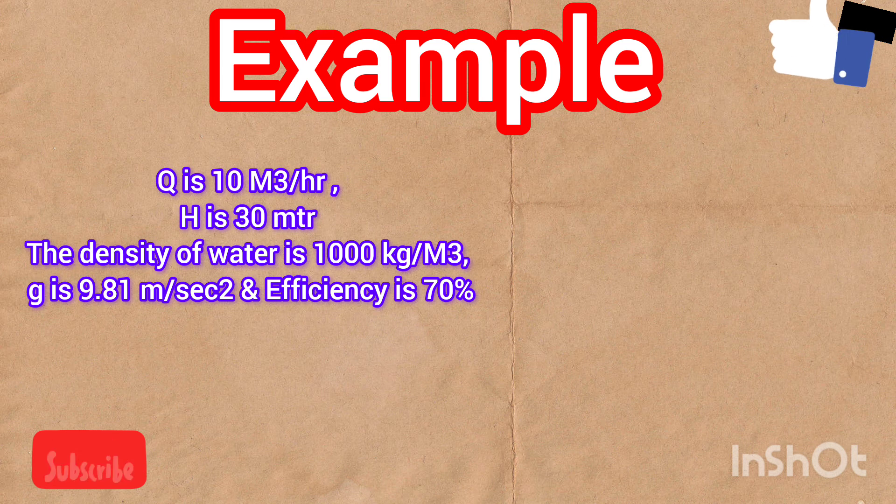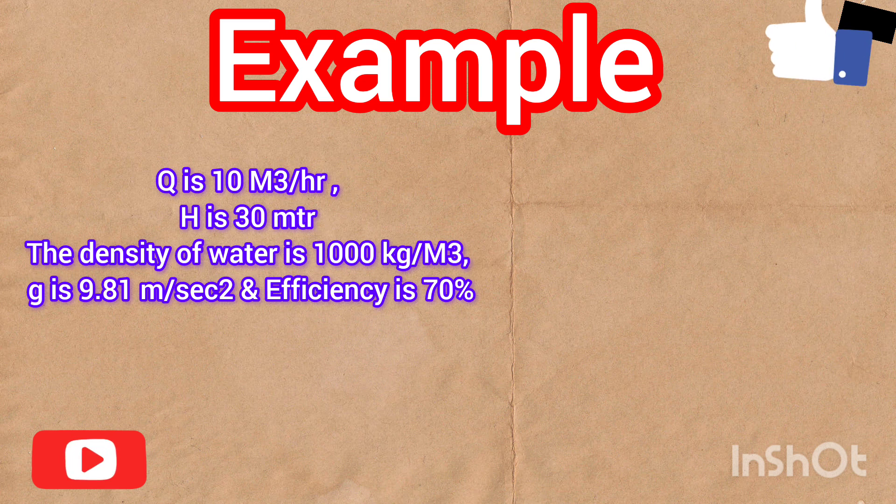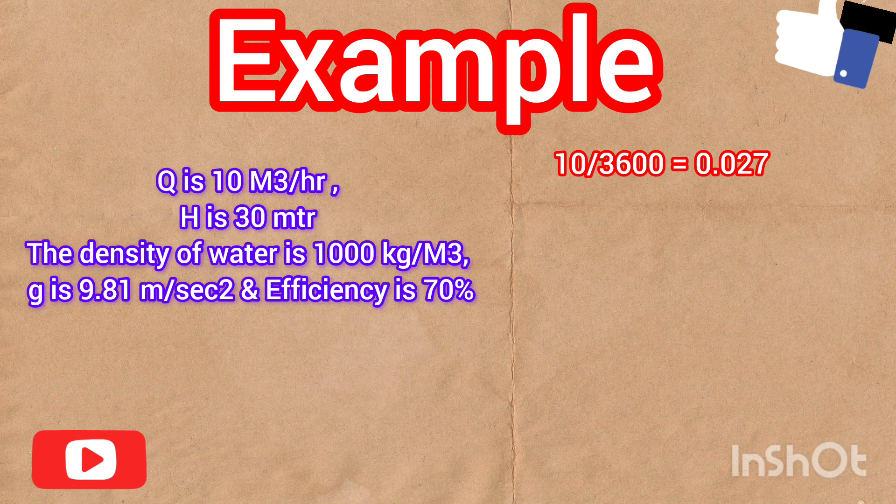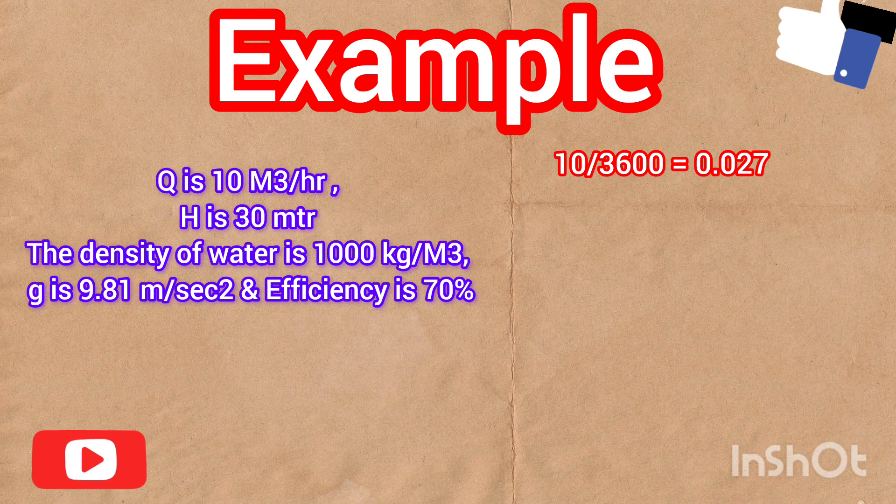Let's start the calculation. First we need to convert flow from meter cube per hour to meter cube per second. To convert we divide the flow rate by 3600, so 10 divided by 3600 equals 0.027 meter cube per second.